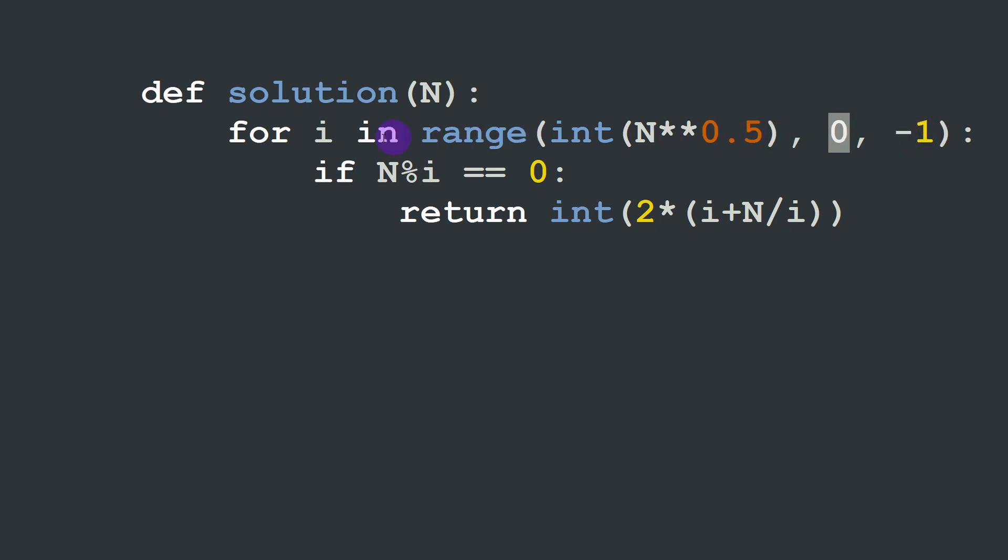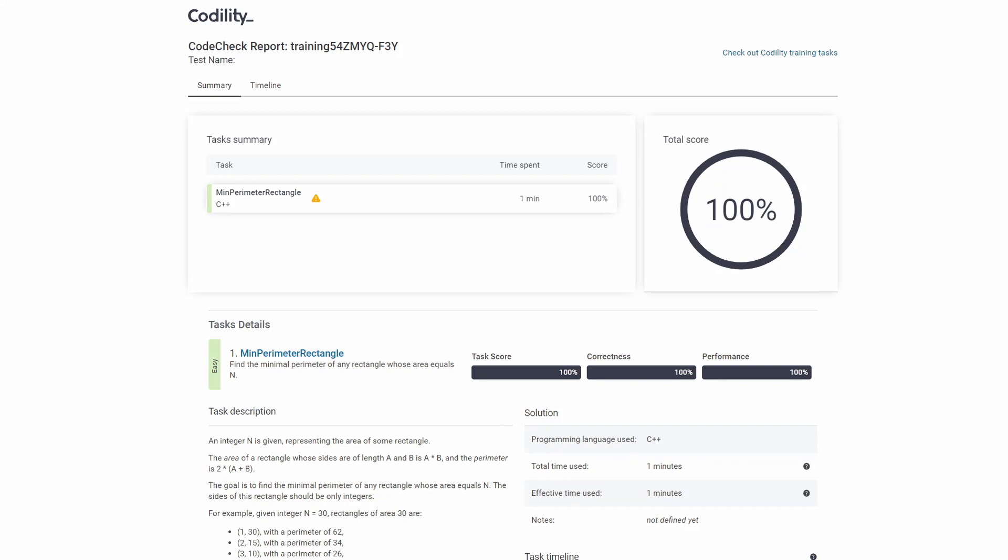Then the step is minus one, meaning we need to decrement our i index or our i variable for each iteration. If N modulus i is equal to zero, meaning we have our solution, we return the perimeter which is twice i plus N over i, and we have to cast it into an integer because again Python will consider it as a float. This is it for this solution. It scores a hundred percent in both C++ and Python.